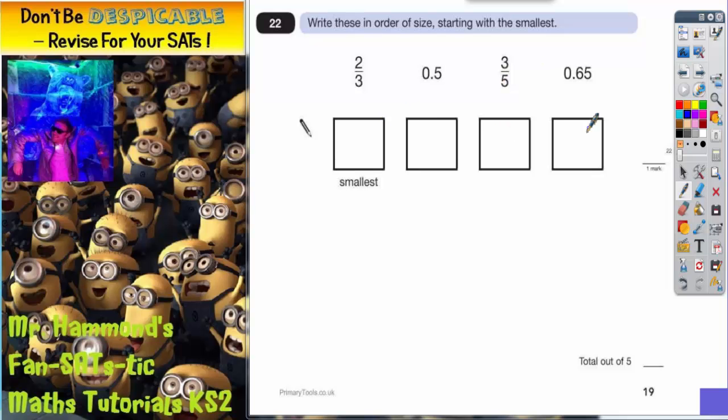Now the first thing you notice is we've got a mixture. We've got a couple of fractions, two-thirds and three-fifths, and we've got a couple of decimals, 0.5 and 0.65.